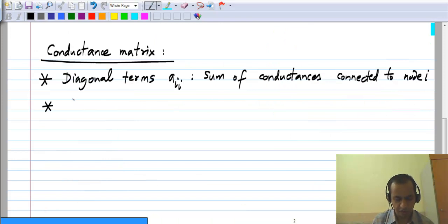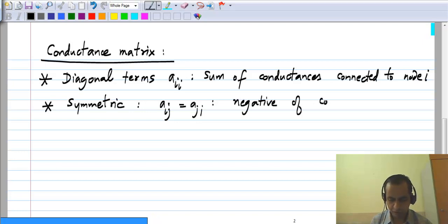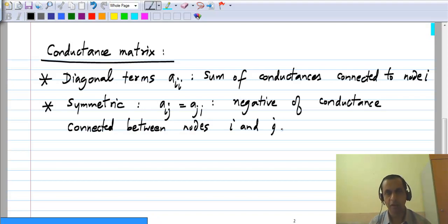But of course, the matrix itself is symmetric, and the terms Aij or Aji, which will be equal to each other, corresponds to the negative of conductance connected between nodes i and j. So this is the structure of the conductance matrix.